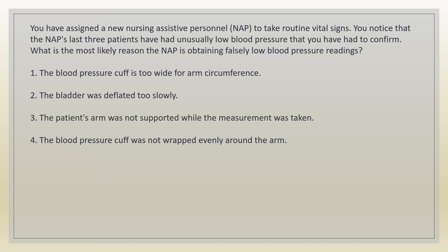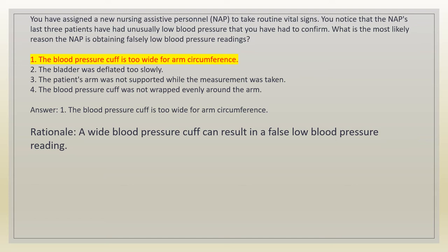You have assigned a new nursing assistive personnel (NAP) to take routine vital signs. You notice that the NAP's last three patients have had unusually low blood pressure that you've had to confirm. What is the most likely reason the NAP is obtaining falsely low blood pressure readings? 1. The blood pressure cuff is too wide for arm circumference. 2. The bladder was deflated too slowly. 3. The patient's arm was not supported while the measurement was taken. 4. The blood pressure cuff was not wrapped evenly around the arm. Answer: 1. Rationale: a wide blood pressure cuff can result in a falsely low blood pressure reading.